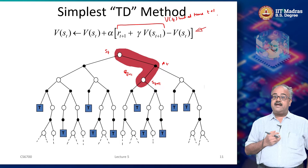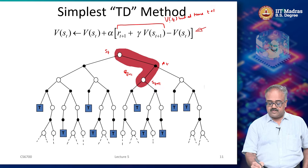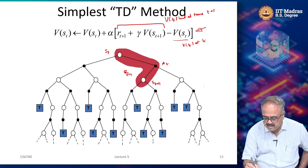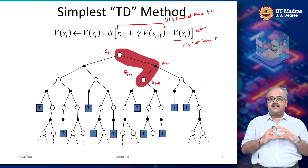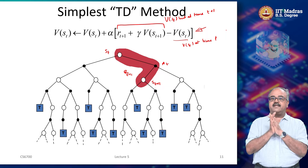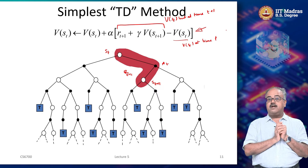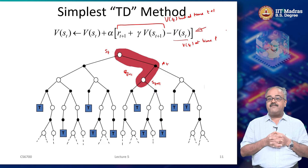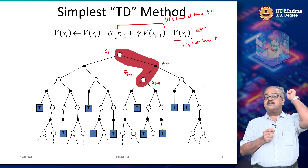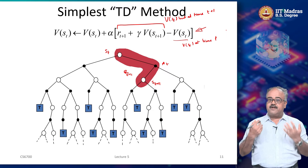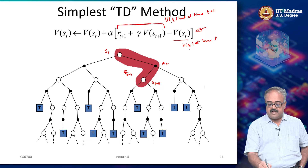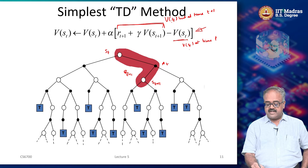Now at time t+1, I look back at time t and ask: what is the prediction of the return at time t that I can make when I am at time t+1? So R_{t+1} + γ·V(S_{t+1}) is V(S_t) estimated at time t+1, and V(S_t) at time t is the original estimate. At time t, V(S_t) is the prediction of the expected return starting from state S_t. At time t+1, R_{t+1} + γ·V(S_{t+1}) is the prediction of the return starting from S_t. That is why this is called the temporal difference error — both are predictions of the same quantity V(S_t), but at different times.